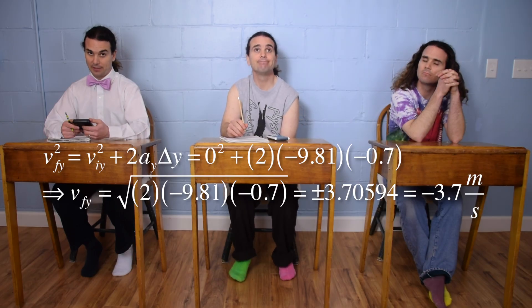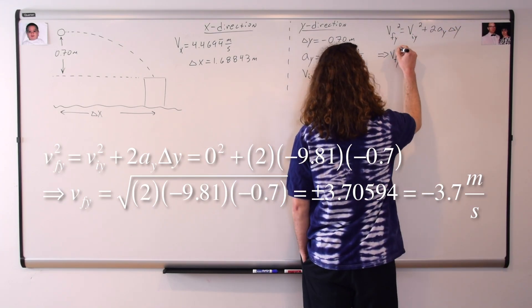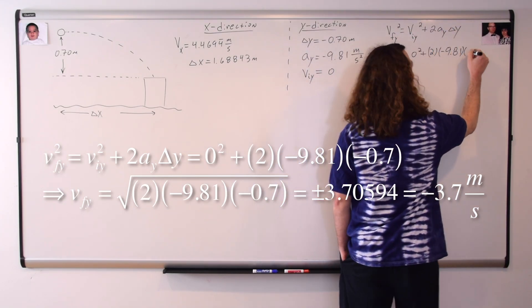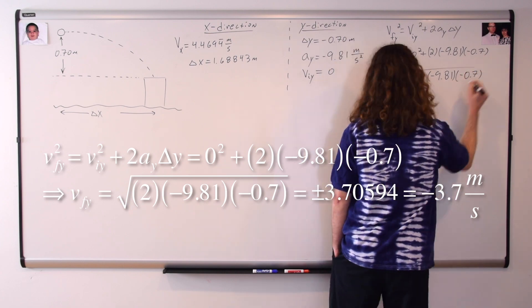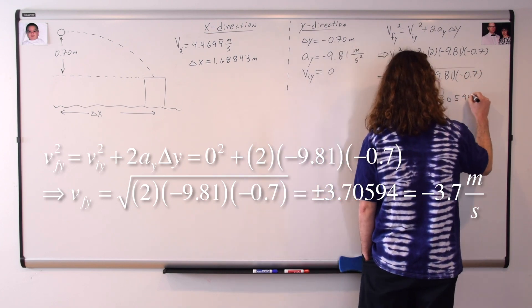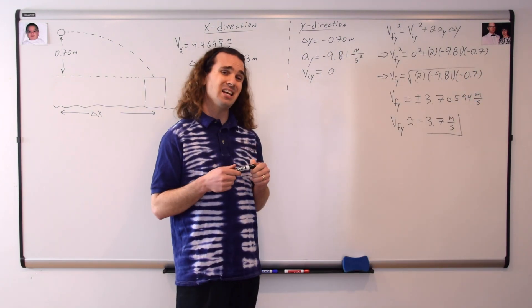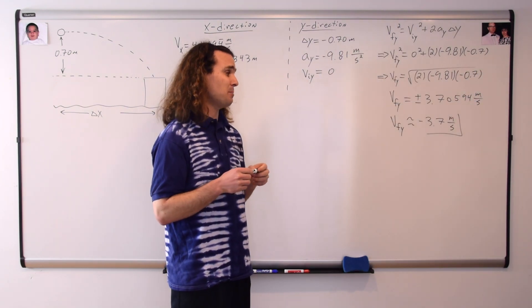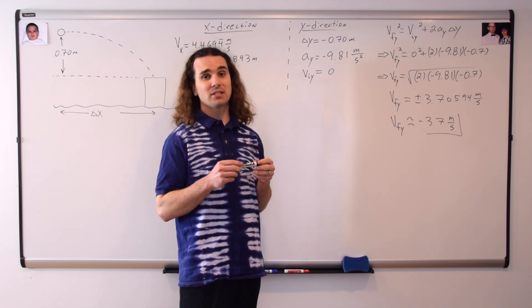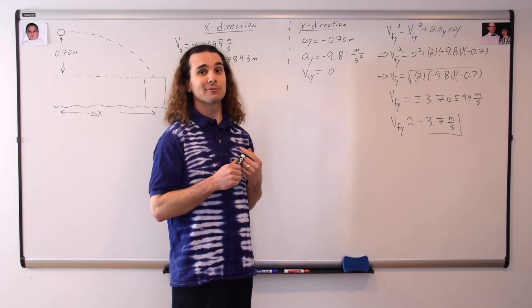Stupid calculator. So the velocity of the ball right before it lands in the bucket is 3.7 meters per second down.